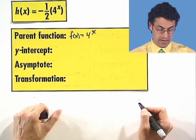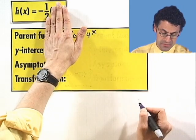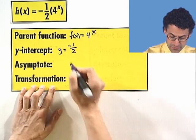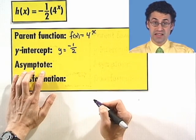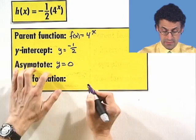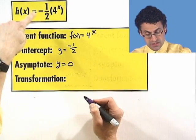The y-intercept. So where do we intercept the y-axis? That's when x equals 0. So this becomes a 1, and so I just see y equals negative 1 half. Where's the asymptote? So we have a horizontal asymptote still at y equals 0, because I'm not changing the general movement of it.